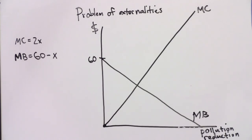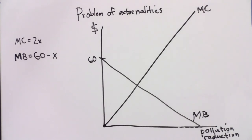Now we have a graph that illustrates both the marginal cost to your neighbor and the marginal benefit to you of pollution reduction. The marginal benefit curve has an intercept of 60 and a slope of minus 1. Note that in this example the benefits and the costs are given in terms of pollution reduction, which we call X.